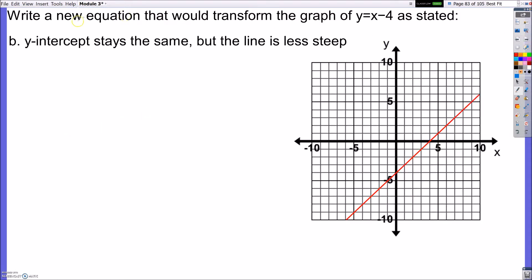All right, so let's look at the next one. It says y-intercept that stays the same. So I'm going to stay right here, which that's my b-value. My b-value is negative 4, but I want it to be less steep.